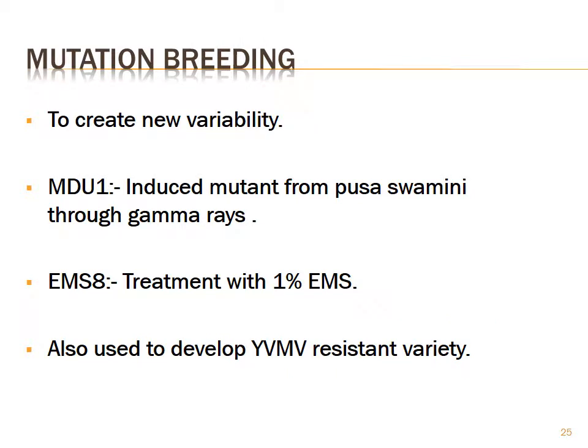Mutation breeding in Bindi creates new variability. MDU1 is an induced mutant developed from Pusa Savani through colchicine treatment. EMS treatment with 1% EMS is also used to develop yellow vein mosaic virus resistant varieties.